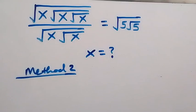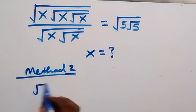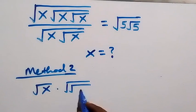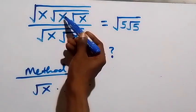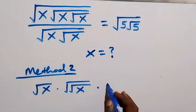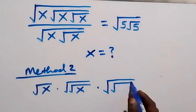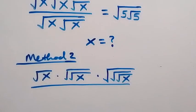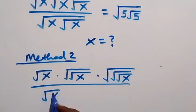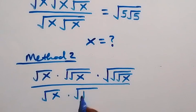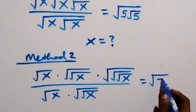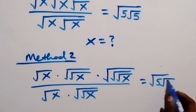Then the second method. From here, method 2: we can separate the expression as root x times root — we have 2 roots here — then x. The other one contains 2 roots, then times this one which contains 3 roots, then x, divided by root x times root — that's 2 roots — then x. This equals root 5 times root 5. Let's leave this the way it is here.